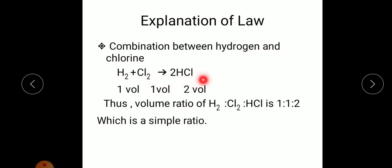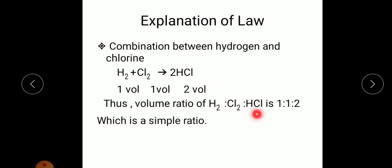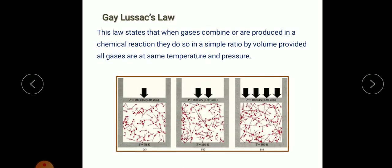To verify Gay-Lussac's law, consider the combination of hydrogen and chlorine. When hydrogen reacts with chlorine, it forms two molecules of HCl. In terms of volume: one volume of hydrogen and one volume of chlorine give two volumes of HCl. The ratio of H₂ : Cl₂ : HCl is 1:1:2, which is a simple ratio, proving Gay-Lussac's law — gases combine in simple ratios by volume at the same temperature and pressure.